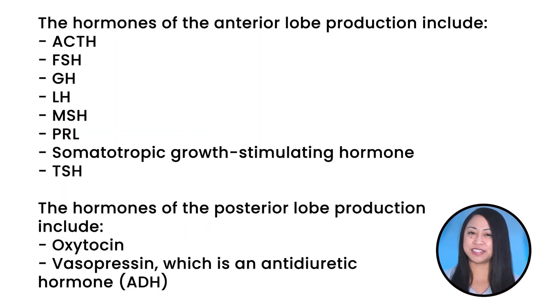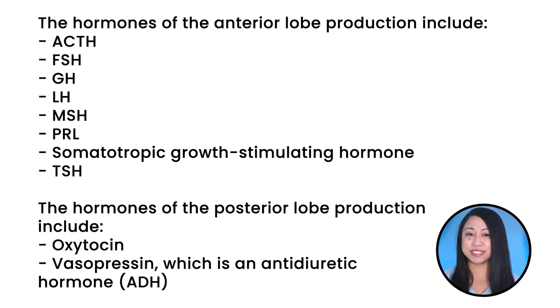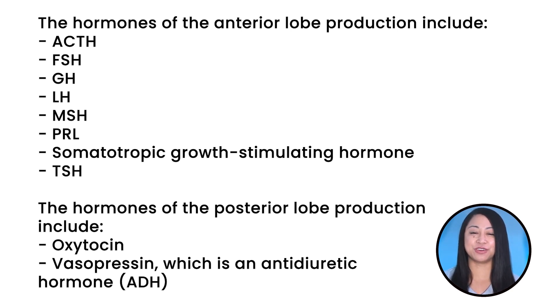What are the hormones that are regulated by the pituitary glands? Take a look at this list. The hormones of the anterior lobe production include ACTH, FSH, GH, LH, MSH, PRL, somatotrophic growth stimulating hormone, and TSH. The hormones of the posterior lobe production include oxytocin and vasopressin, which is an antidiuretic hormone, abbreviated to ADH.